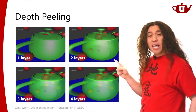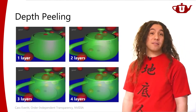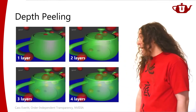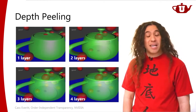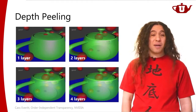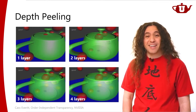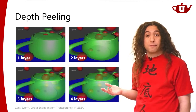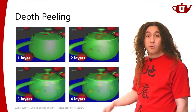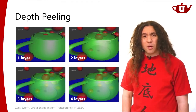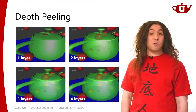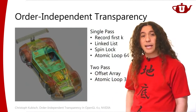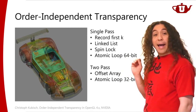The downside: if you need four layers, you render the scene four times — render time is multiplied by four. If you were getting 60 FPS, you'd drop to 15 FPS. You may need far more than four layers in some visualizations. So depth peeling is too slow for many use cases. We'd like OIT in a single pass, maybe two passes, and that is doable.